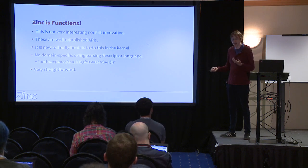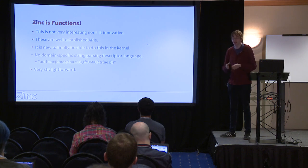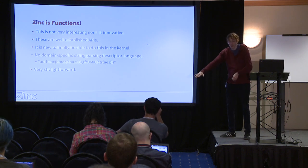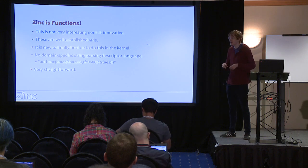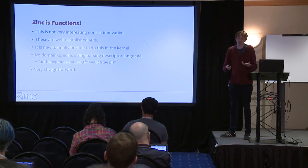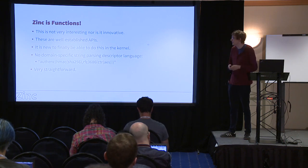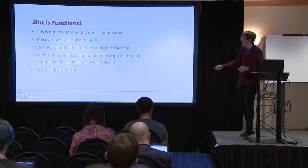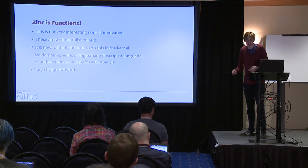Here's another one of those crazy strings from the old crypto API - a domain-specific language to specify what cipher you want. We're not going to have that in Zinc. If you want dynamic dispatch you can implement it yourself or use the existing crypto API which can call into Zinc for software-based algorithms. But most of the time people want one specific algorithm because they're implementing a driver that does a particular thing. So we don't want to be parsing these strings in the kernel. We just have functions.